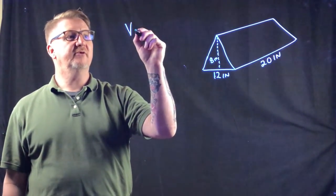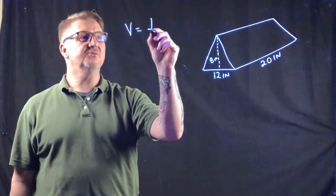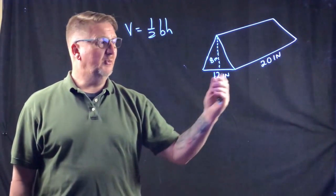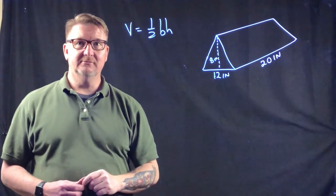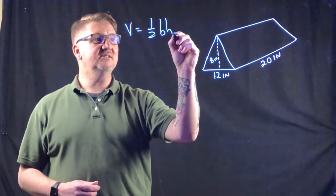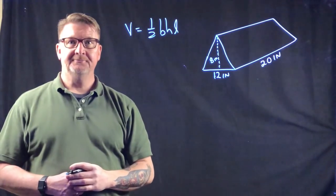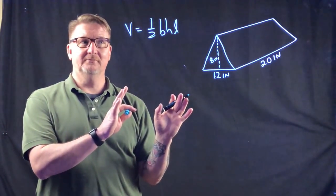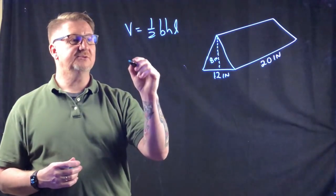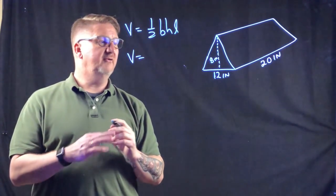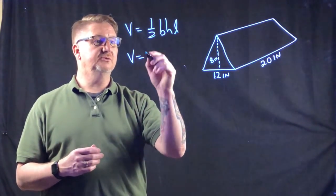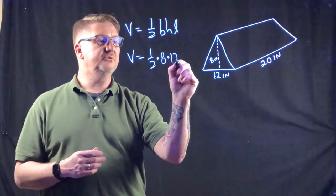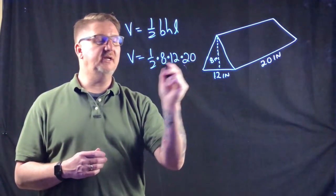The base formula for the triangle is one half base times height, but since we have an added dimension — the length — the volume formula becomes: volume equals one half times base times height times length. Plugging in our values: one half times 8 times 12 times 20.